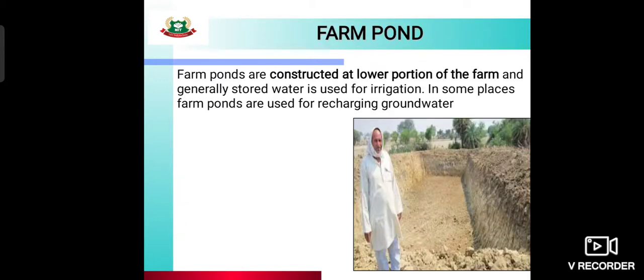What is a farm pond? It is constructed at the lower portion of the farm. It is excavated from the ground, and the water stored in it is generally used for irrigation purposes.